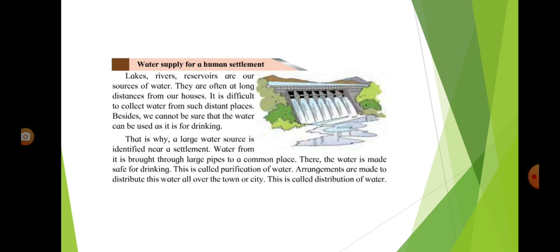Besides, we cannot be sure that the water can be used as it is for drinking. That is why a large water source is identified near a settlement. Water from it is brought through large pipes to a common place. There, the water is made safe for drinking. This is called purification of water.